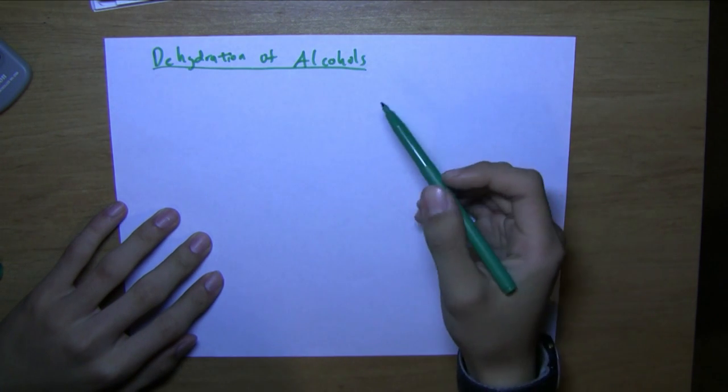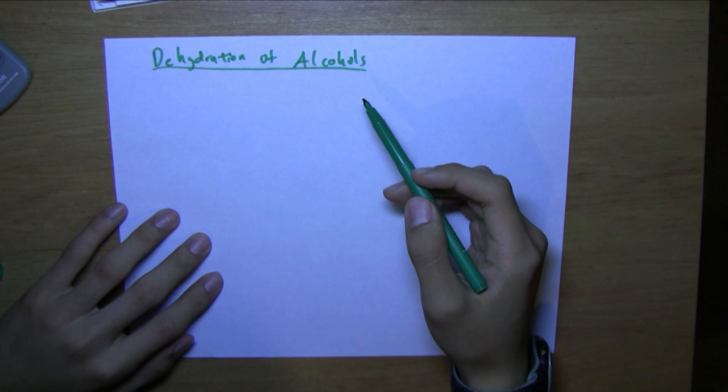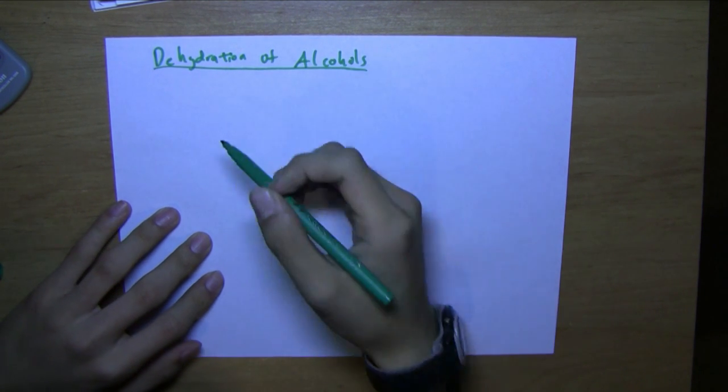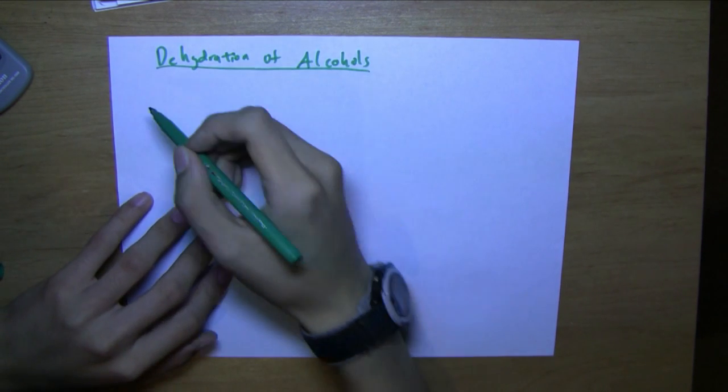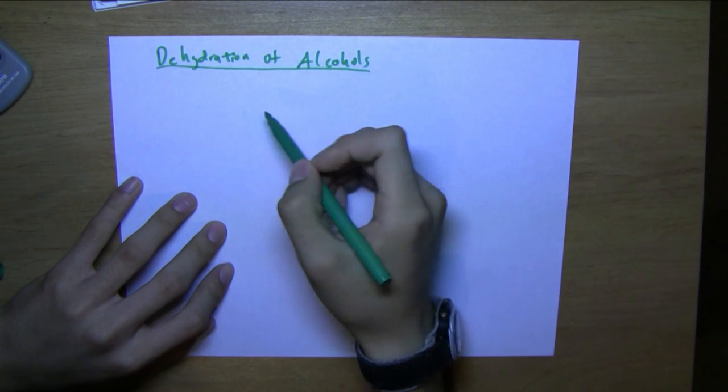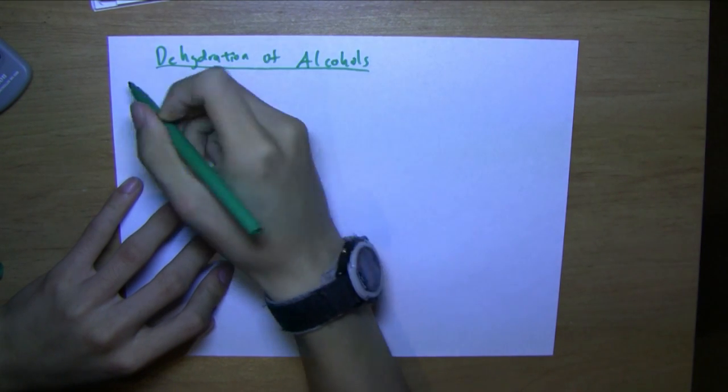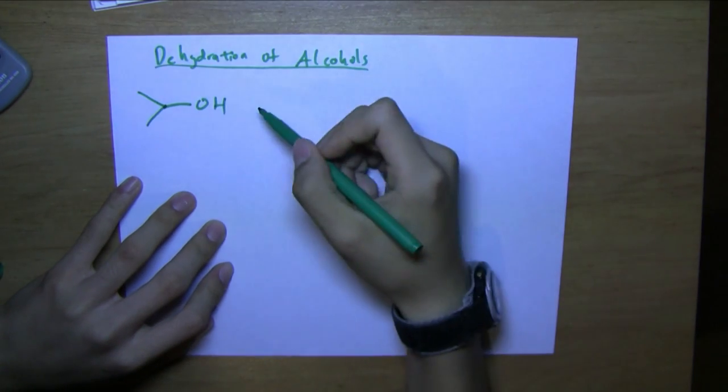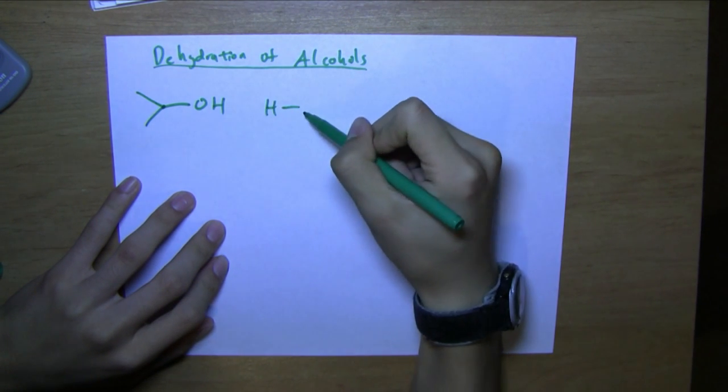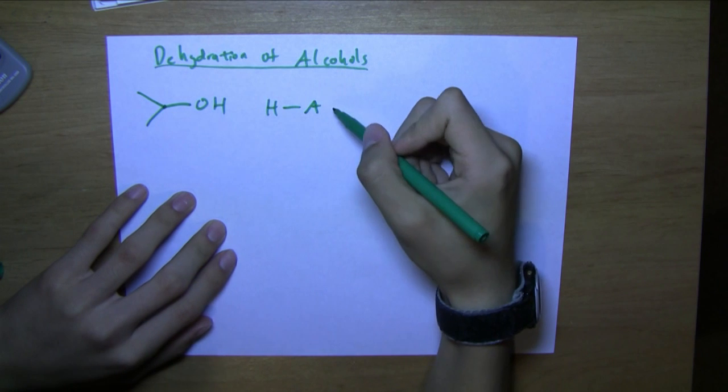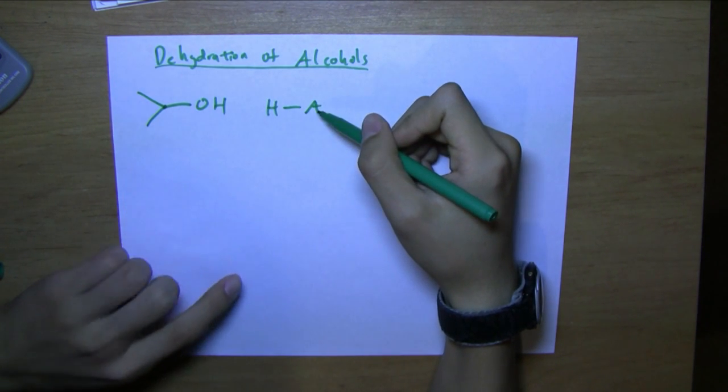The secondary and tertiary alcohols both proceed through an E1 mechanism while the primary proceeds through an E2. So let's do an example of a secondary alcohol being dehydrated. Now we're going to use HA as the acid, and just note that A is a generic representation of an acid.